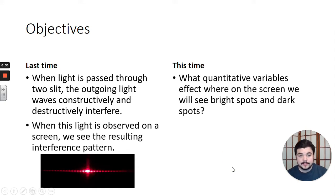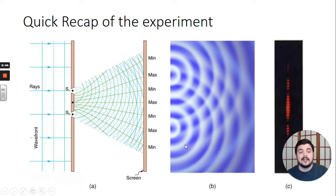This time, our goal is to determine what quantitative variables affect where on the bright screen you will see those bright spots and dark spots. What determines the spacing of the bright and dark spots? Let's get started.